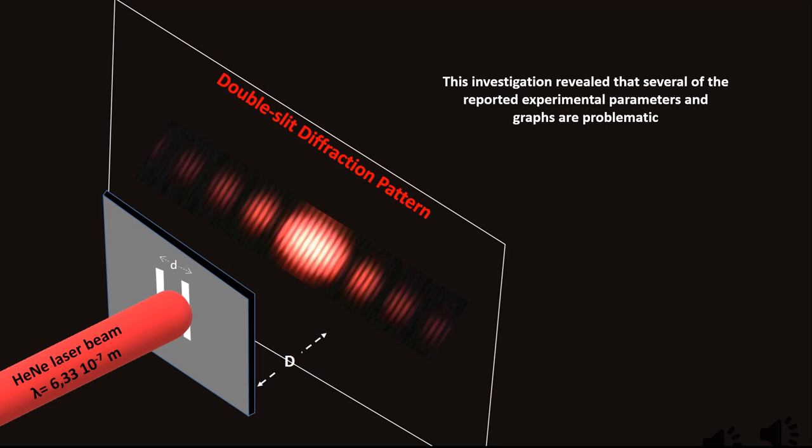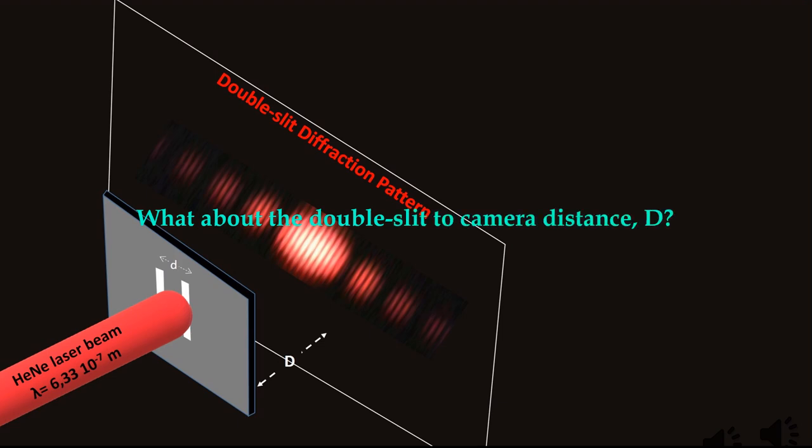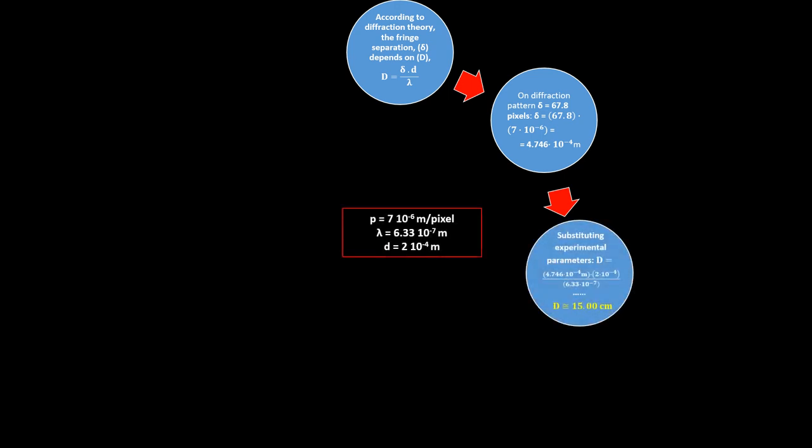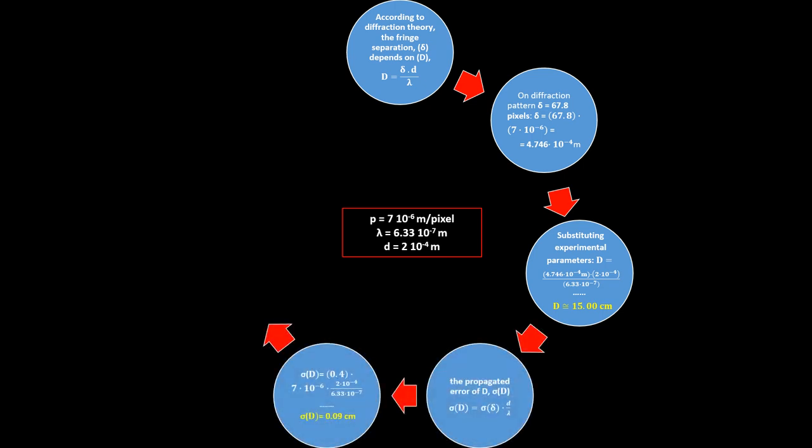This investigation revealed that several reported experimental parameters and graphs are problematic. What about the double-slit to camera distance, capital D? According to diffraction theory the fringe separation delta depends on distance D. On the diffraction pattern, delta equals 67.8 pixels. Substituting the experimental parameters finds D equal to 15 centimeters with propagated error of 0.09 centimeters. But the reported distance of double-slit to camera was 10.4 centimeters.